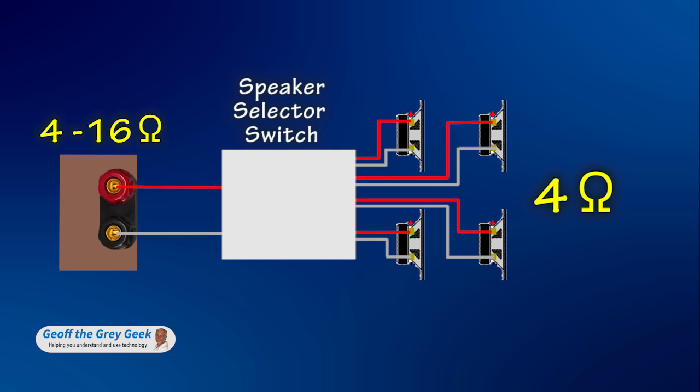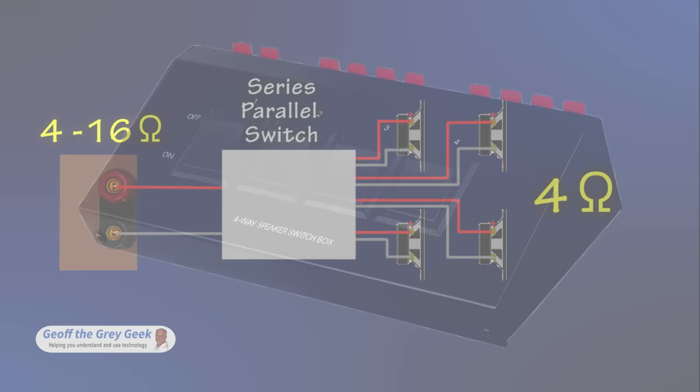One method is to combine the speakers in a series parallel combination internally. This saves you having to figure out the wiring. This method also gives full power to a pair of speakers if only one pair is selected. This method works best for two or four pairs of speakers only. It is not used for six or more pairs of speakers. Speaker selectors which use series parallel switching tend to look like this. They have no protection switch.